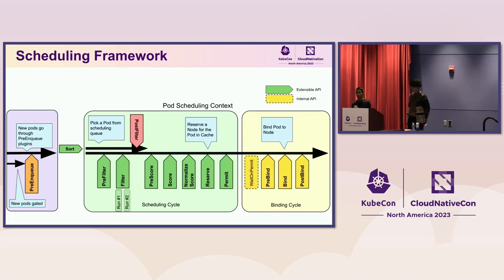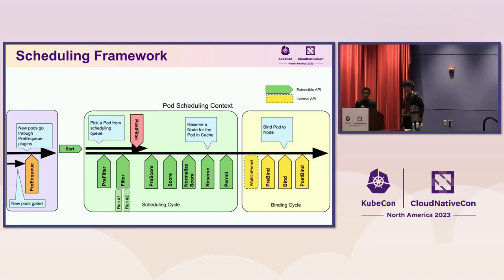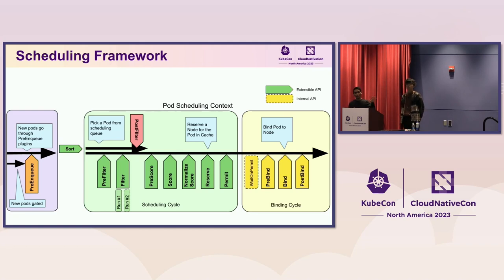More recently, we introduced a new extension point — the purple box on the left side — which is what we call pre-enqueue. The pre-enqueue allows us to make decisions even before we consider the pod for scheduling. The most important feature here is scheduling gates, which allows us to hold a pod from scheduling until some other controller says yes or no. For example, a quota manager can decide whether or not the pod is ready to be scheduled.